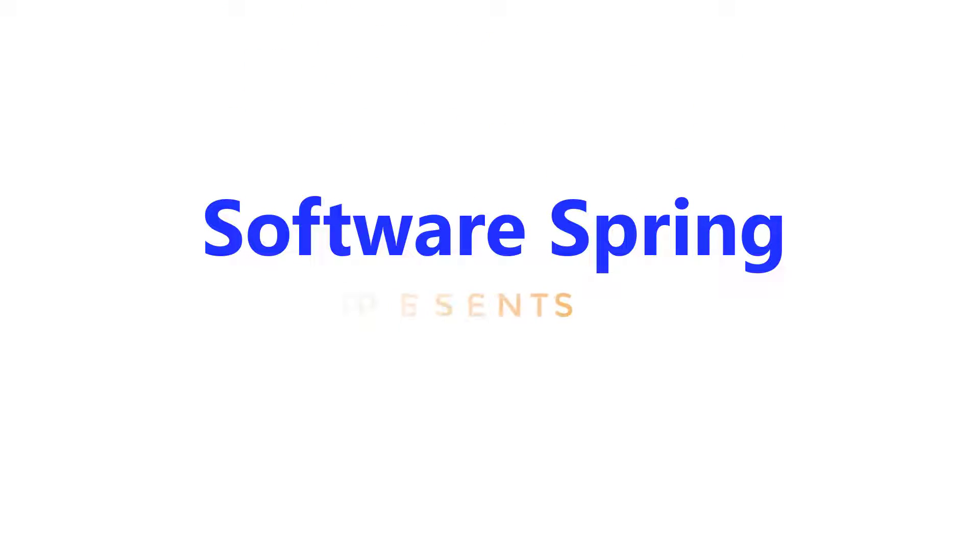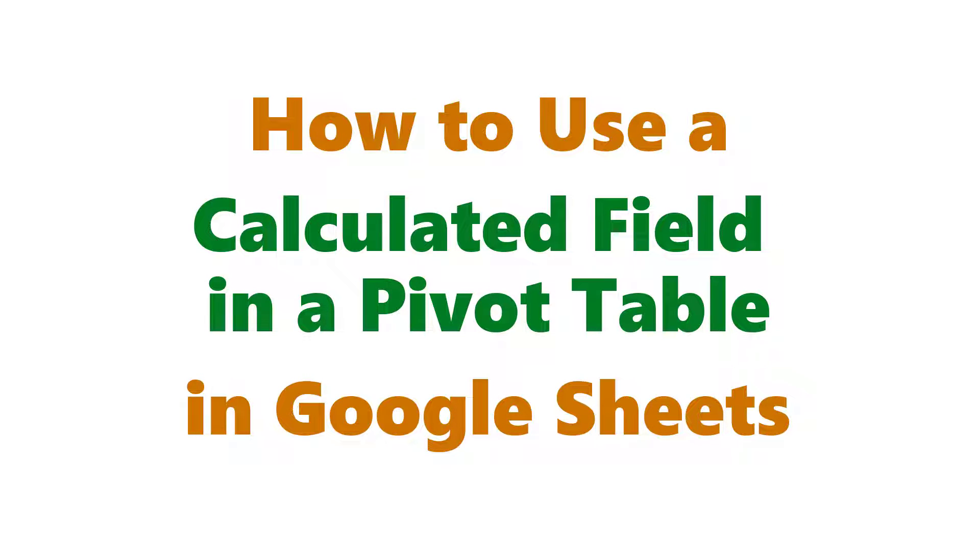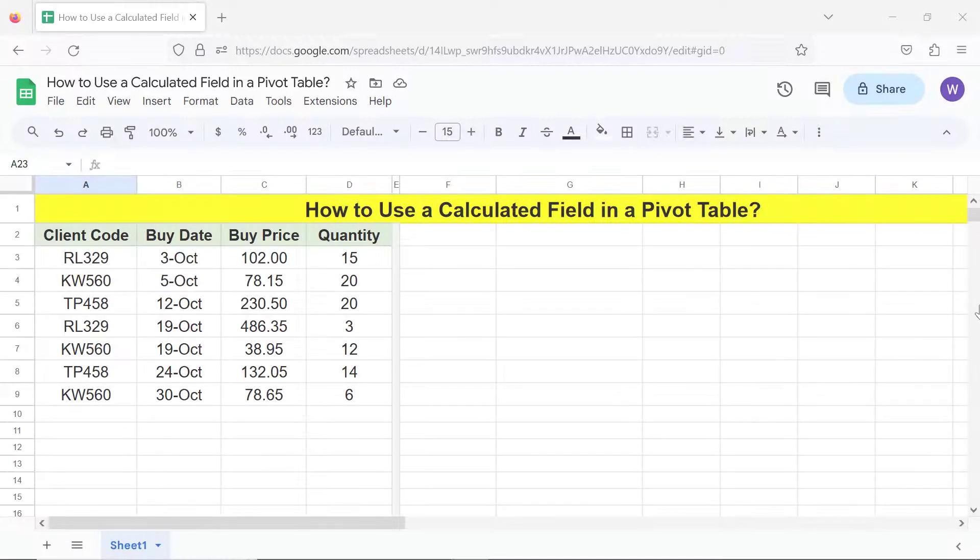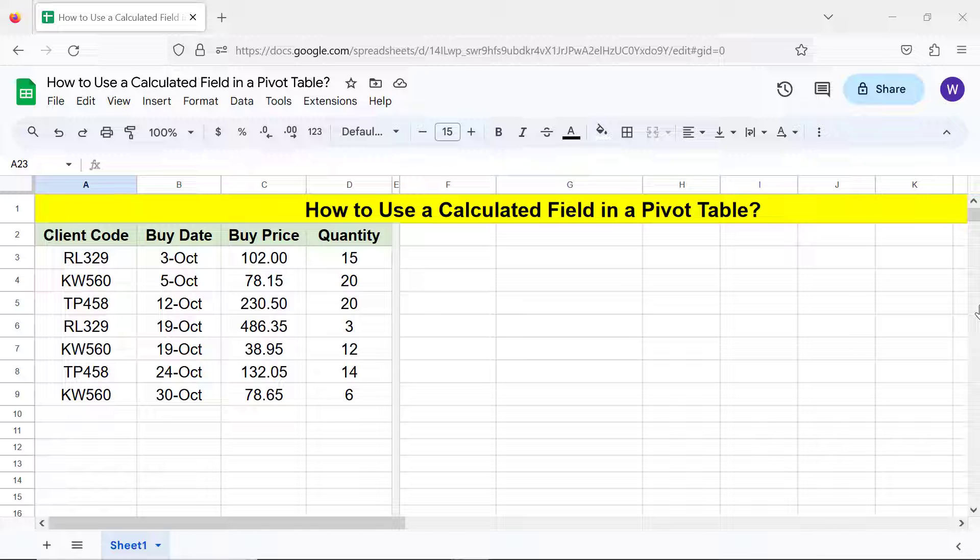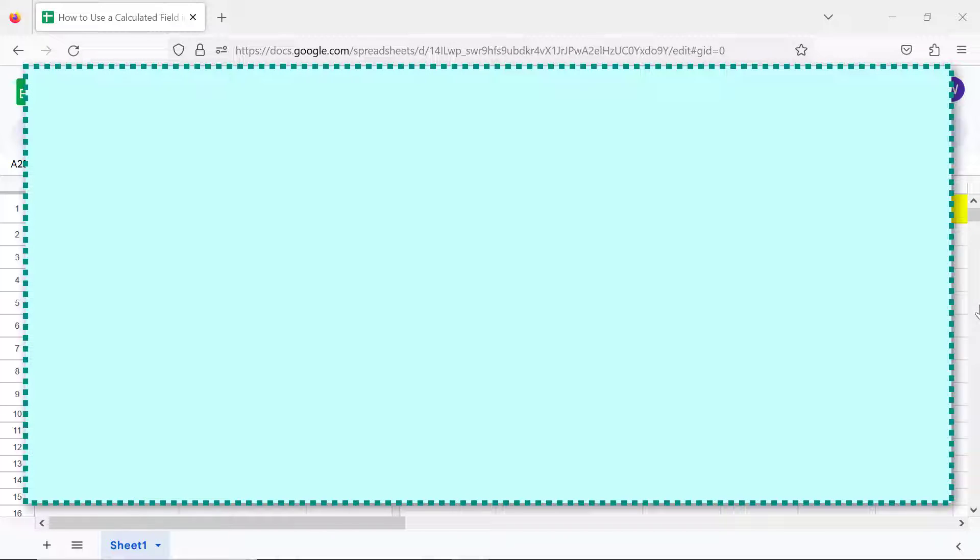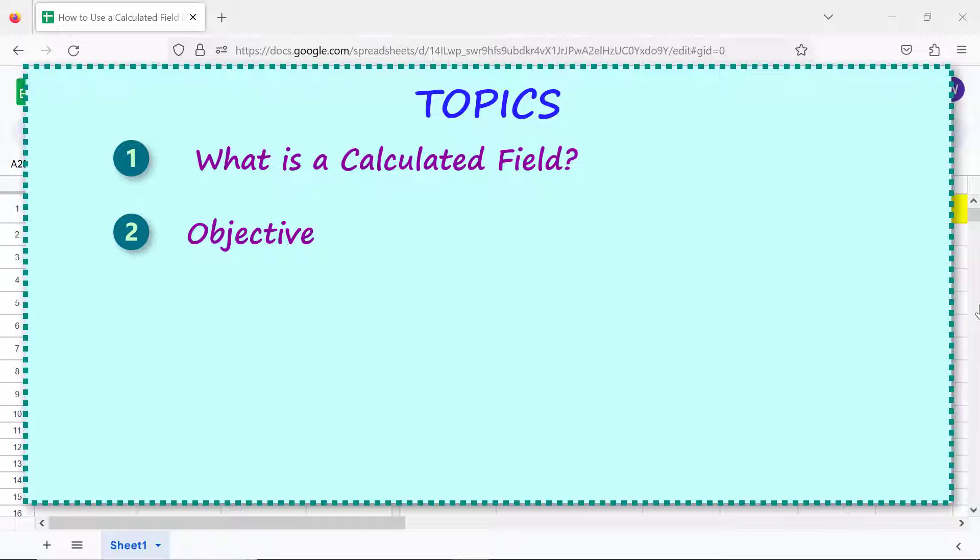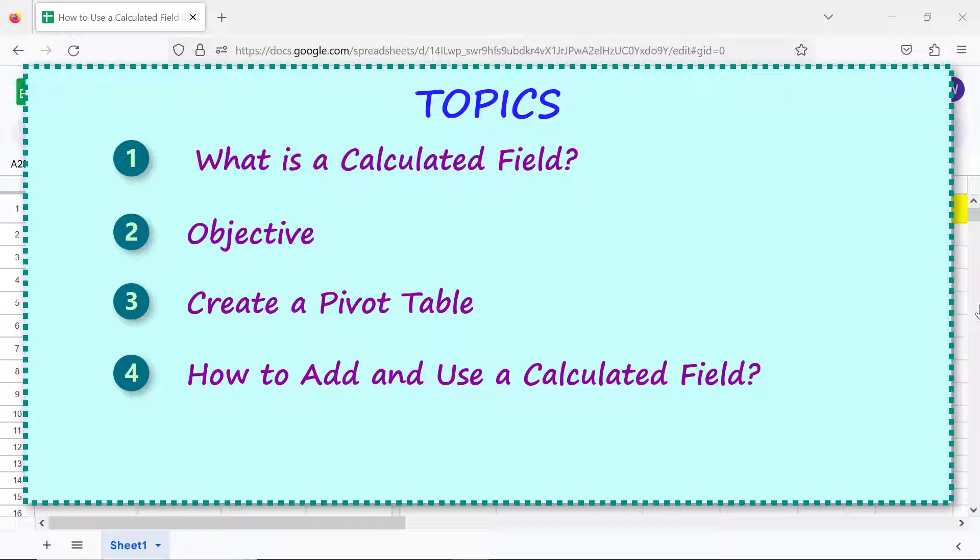Software Spring presents: How to Use a Calculated Field in a Pivot Table in Google Sheets. Hi folks, greetings, welcome to this tutorial which gives the steps to use a calculated field in a pivot table. Here are the topics of the tutorial: what is a calculated field, objective, create a pivot table, how to add and use a calculated field, and quick review.